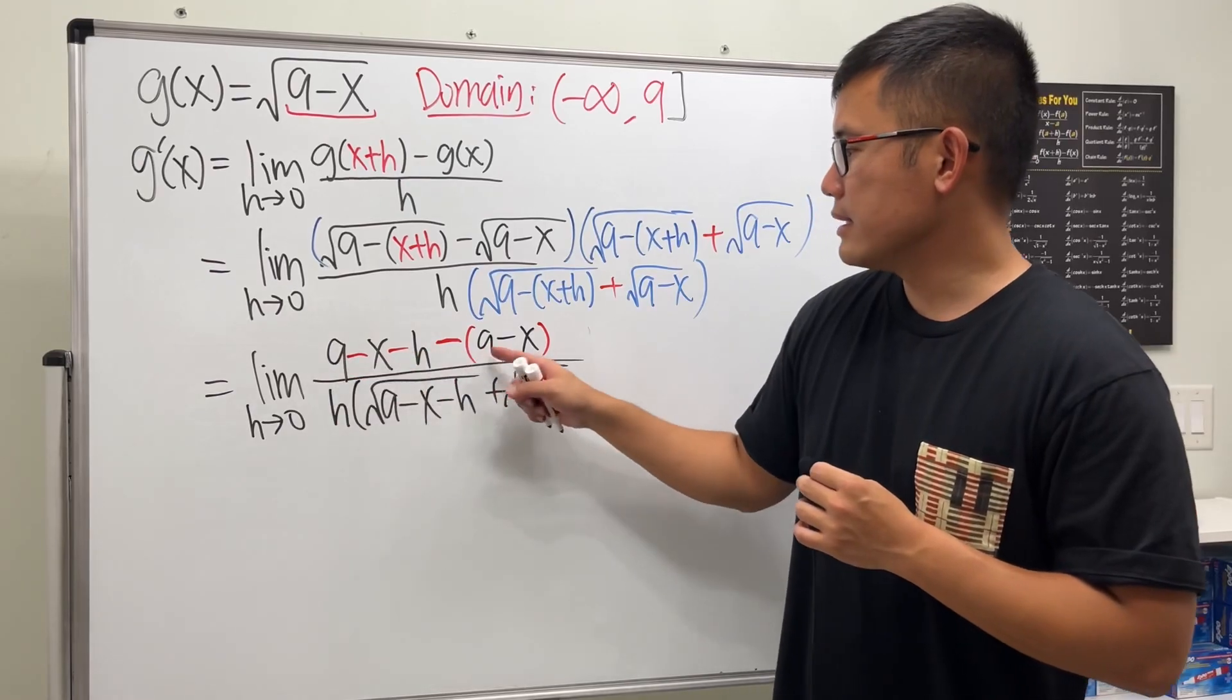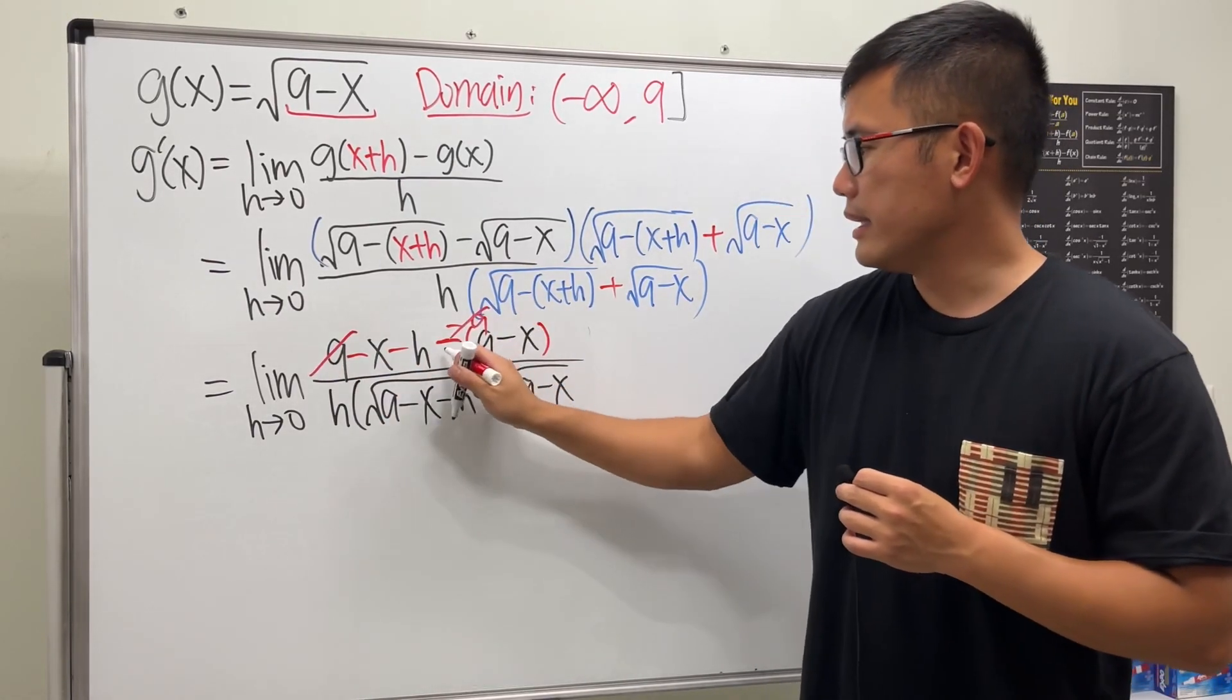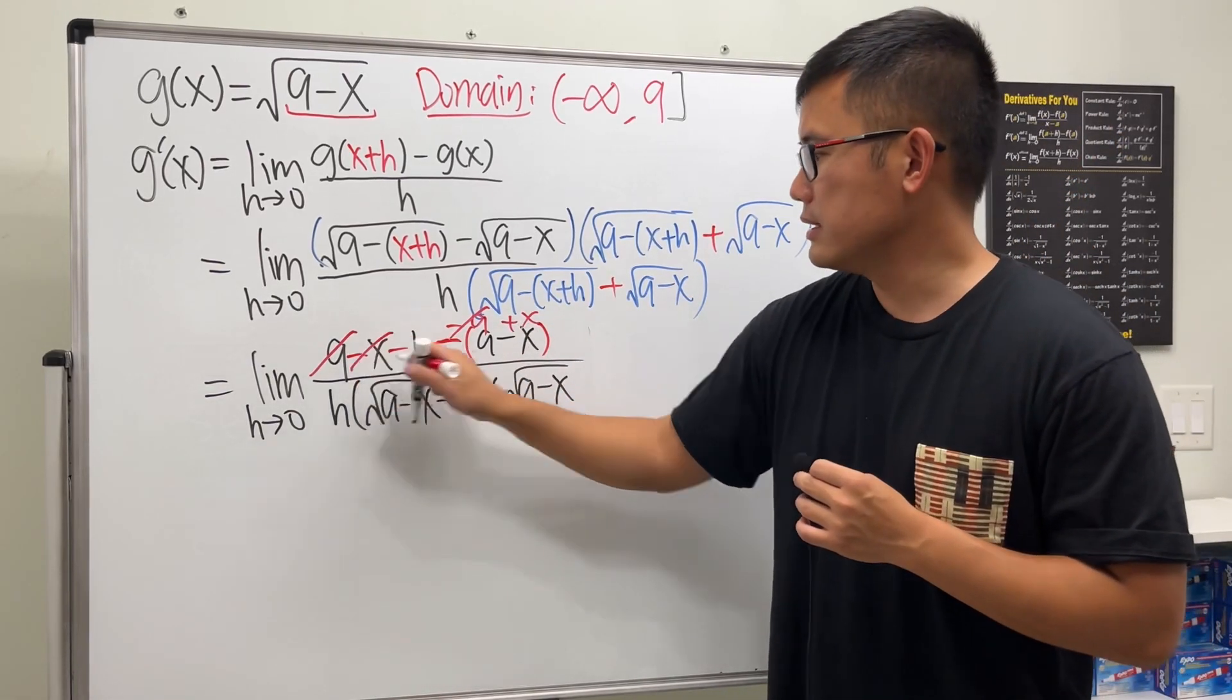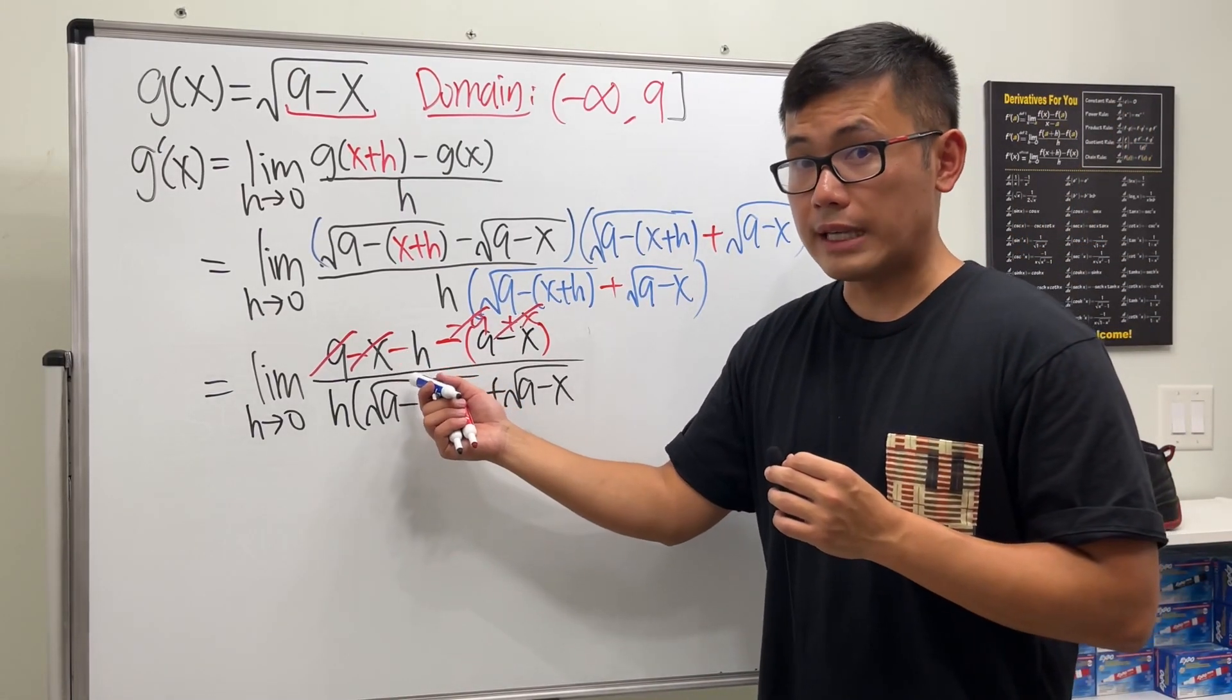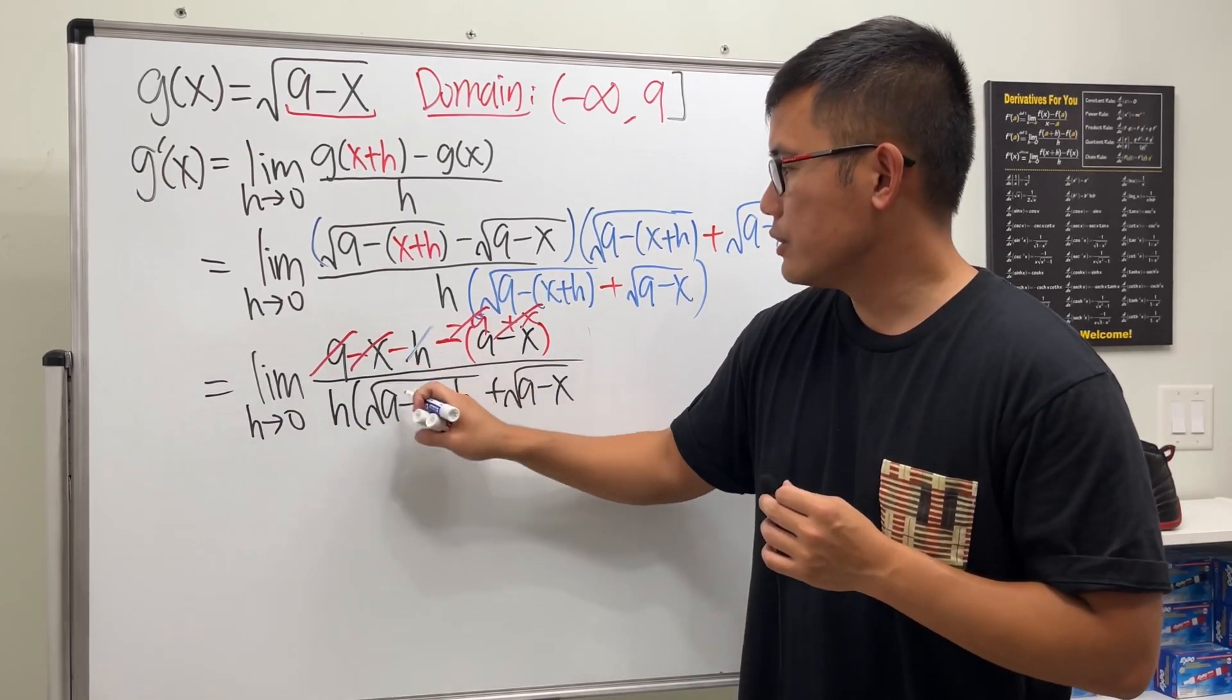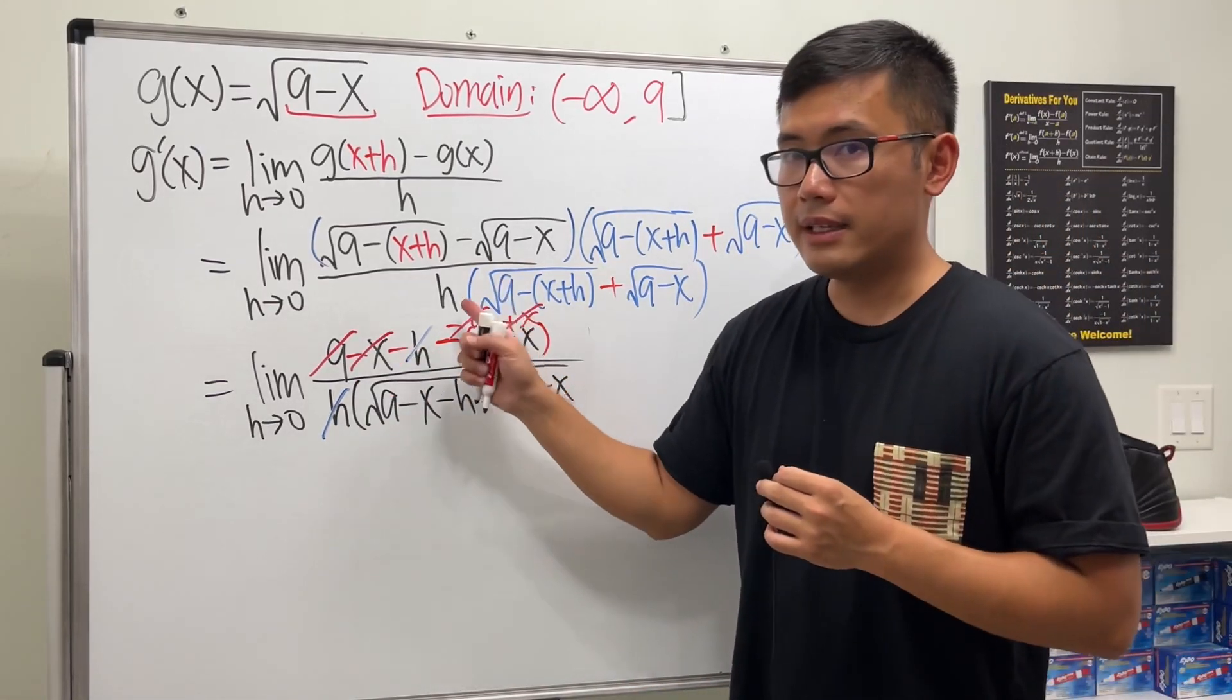Now we see 9 minus 9, they will cancel. And then distributing we get a plus x, but this is minus x, so this and that cancel. And also we see that we have negative h on the top now over h times all that. So this h can be canceled with that h. So finally we're left with a negative 1 on the top.